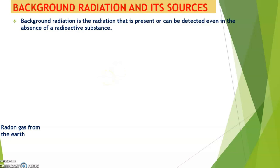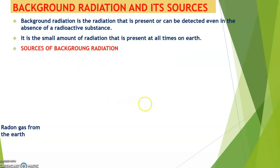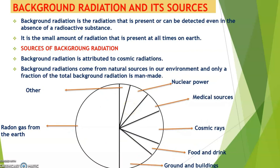The question is, where do those radiations come from? The sources of background radiations include foods and drink, cosmic rays, medical sources, nuclear power, and they also come from the ground and buildings. Much of the background radiations come from radon gas from the earth, and there are other sources as well.